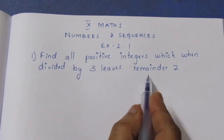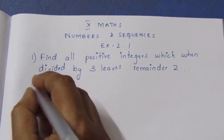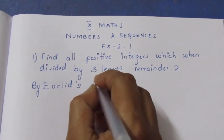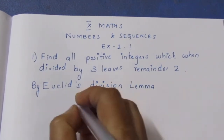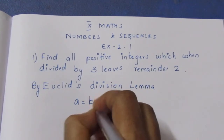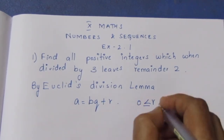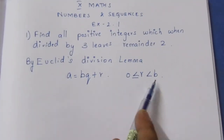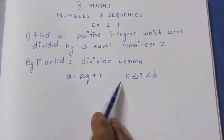To solve this, we use Euclid's Division Lemma. By Euclid's Division Lemma, a is equal to bq plus r, where r is greater than or equal to 0 and less than b. This is the Euclid's Division Lemma formula.